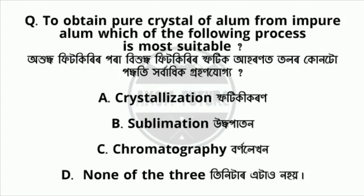To obtain pure crystals of alum from impure alum, which of the following processes is most suitable?